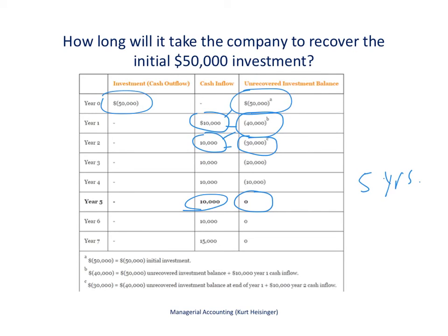How does that help us determine if we want to take on this investment? Companies will often establish a set number of years, and if we can't recover our initial investment within that period, we won't take it on. For example, if the policy requires recovery within four years, we don't take this investment because it takes five years. But if the company's policy allows up to six years — assuming net present value and internal rate of return also provide positive results — then we'd say yes, let's do it, because we'll get our initial investment back within five years. This is the payback method: it simply tells us how many years it will take to recover our initial investment.